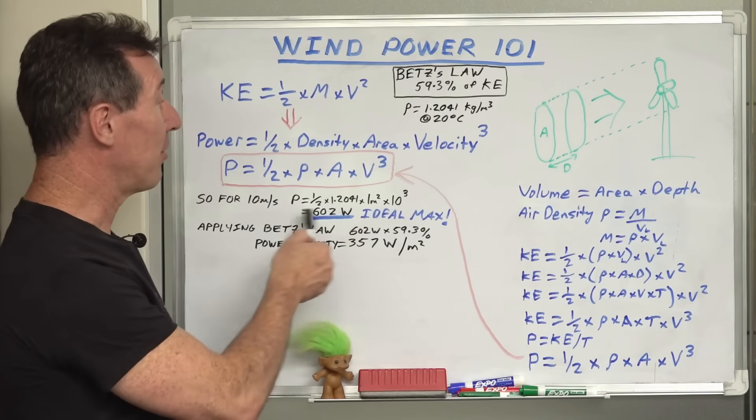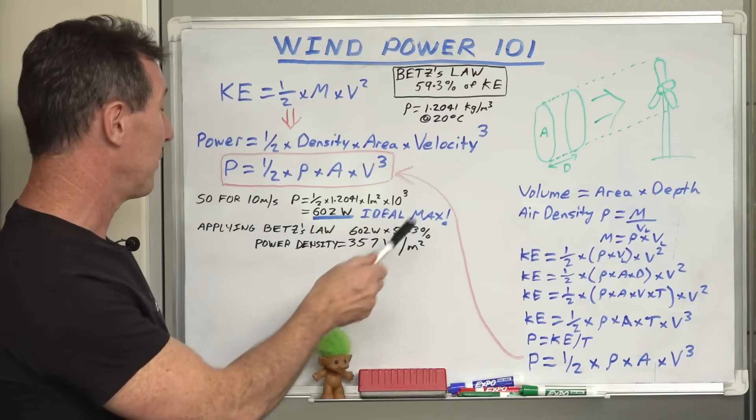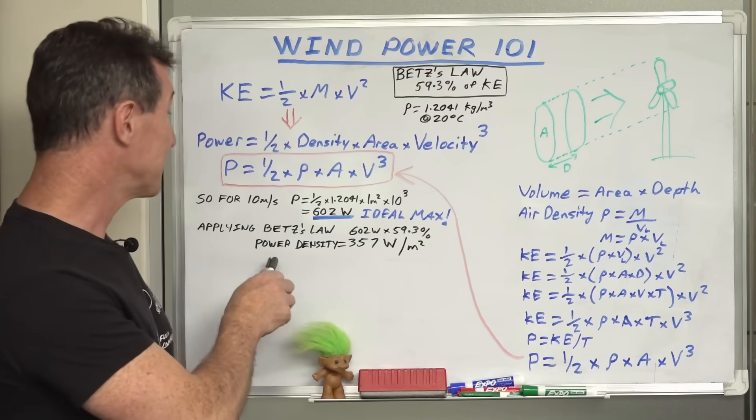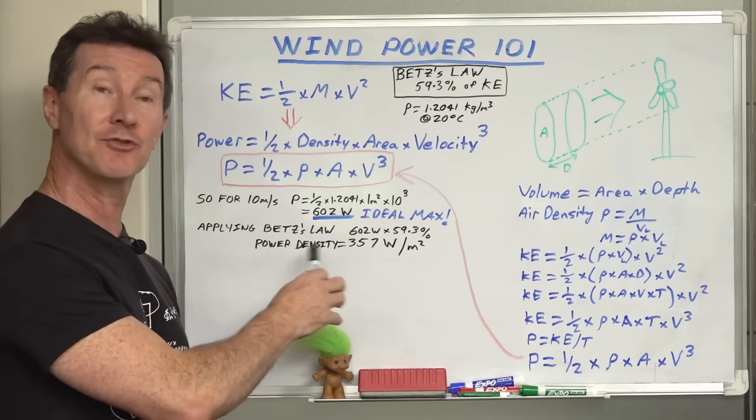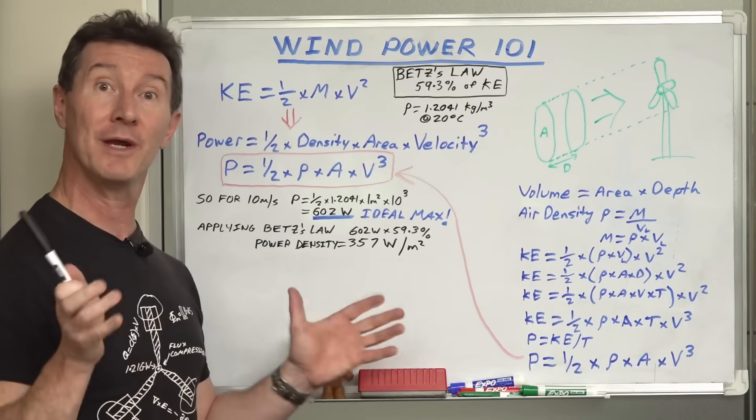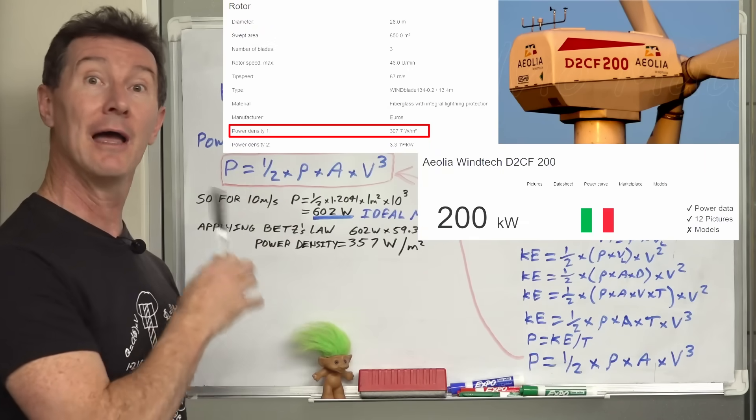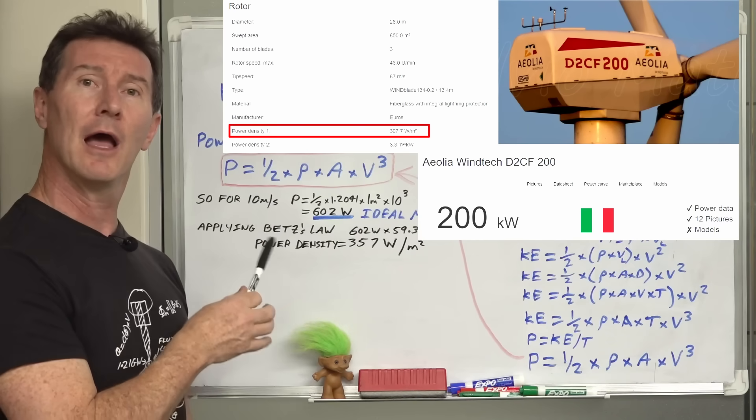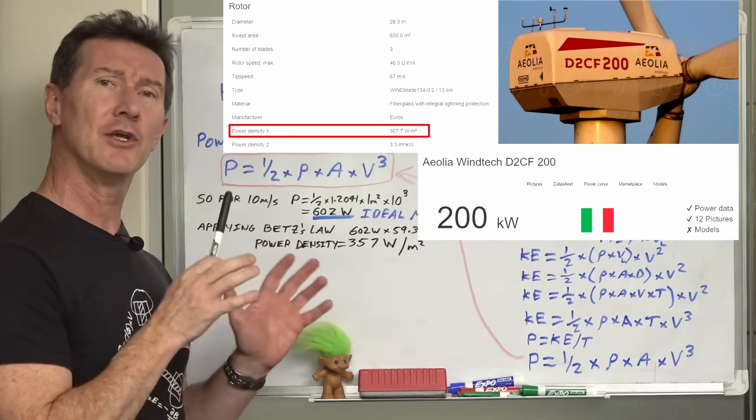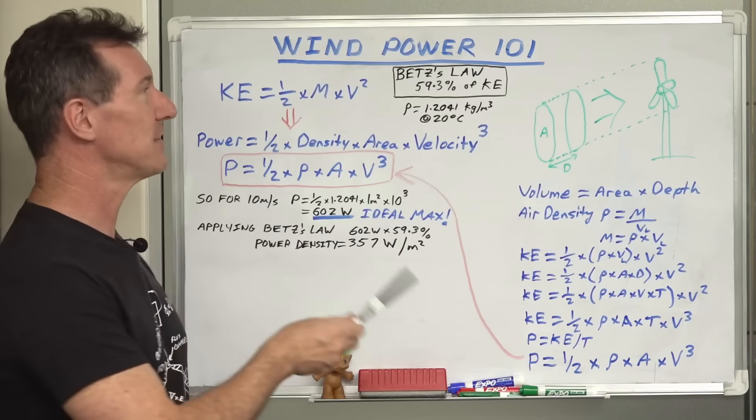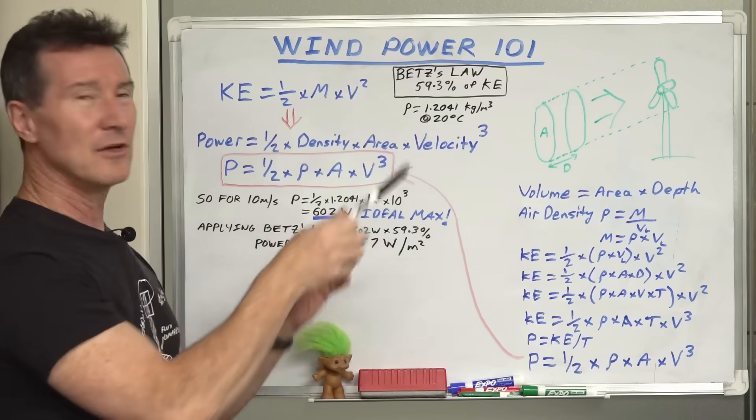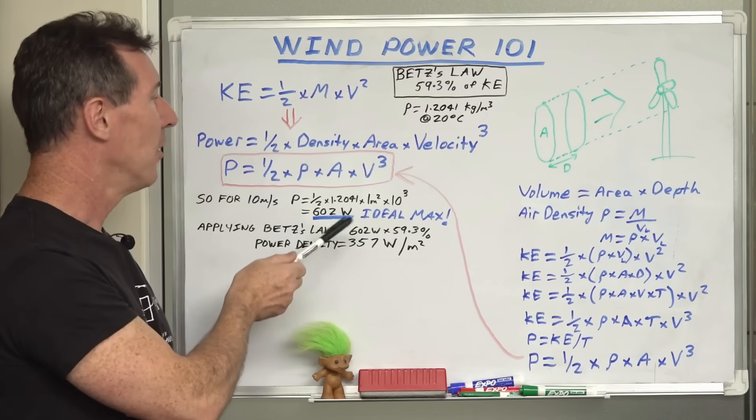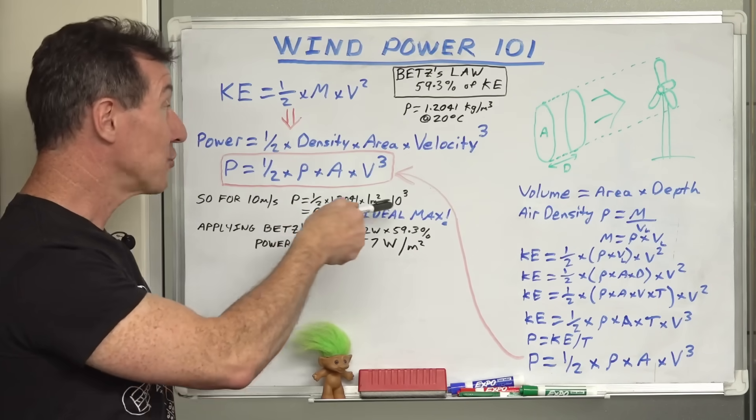So applying Betz's Law to our maximum ideal figure here, times 59.3%, gives us 357 watts per square meter. And this is actually called the power density, which again is an industry standard figure that you'll find in the data sheet for wind turbines. And here's one of the data sheets for a huge 200 kilowatt wind turbine which shows it's just over 300 watts per square meter. And that's typically the best you'll get is 80 to 85%. Because, as I said, you've got the hub in there and you've got other losses to do with the blade design and things like that. But a good wind turbine's around about 80% of Betz's Law, not the actual maximum power.